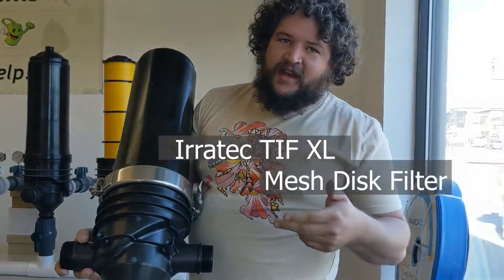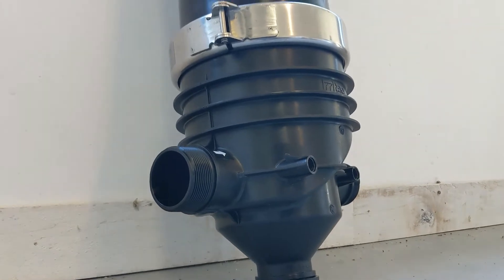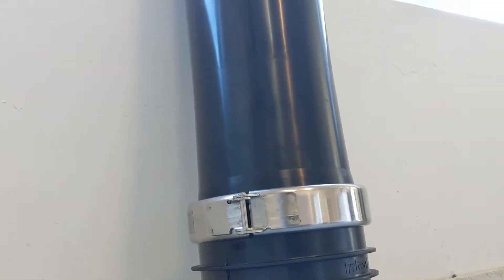Let's take a look at the Iritek TIF XL filter. This is a disk filter that we use in larger, multi-acre field applications.